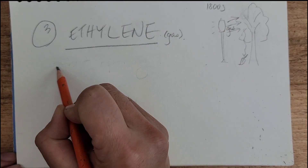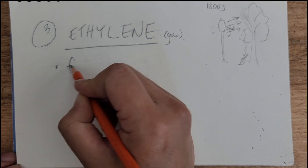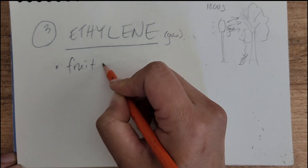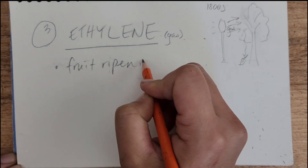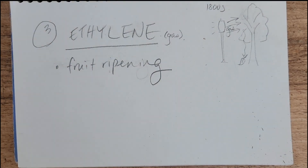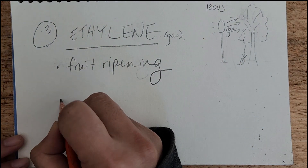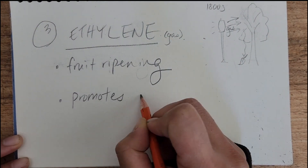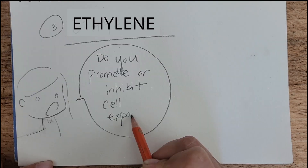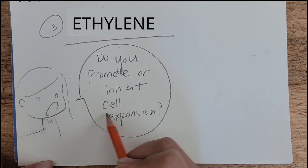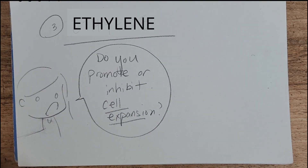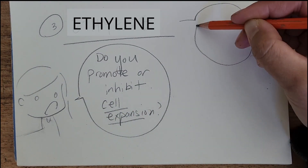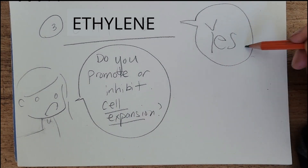This plant growth regulator ripens fruits, causes abscission or loosening so that the leaf or the fruit can fall off, and it can either inhibit or promote cell expansion.